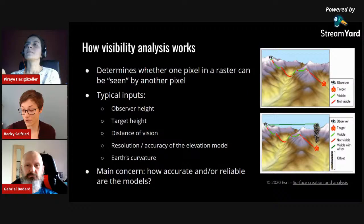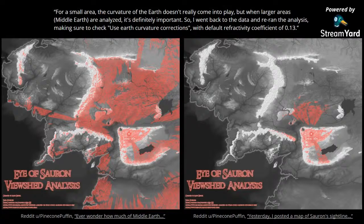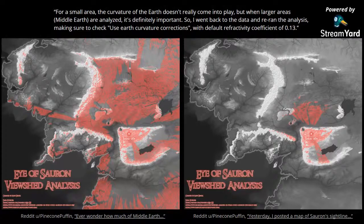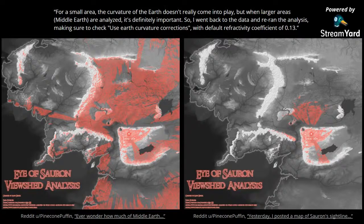A great example from Twitter: somebody calculated the viewshed of the Eye of Sauron — all the pixels in that landscape it could see. Their initial output is on the left. Then another user commented about the curvature of the Earth, and the person redid the analysis accounting for Earth's curvature, getting more accurate results on the right. This is a great example of how good data in leads to good results out.